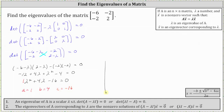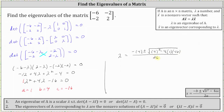I have the quadratic formula below for reference, but instead of x we'll have lambda. We have lambda equals negative b, which is negative four, plus or minus the square root of the quantity b squared — which is four squared — minus four times a times c, where a is one and c is negative 16. This is all over two times a, or two times one. Simplifying, we have lambda equals negative four plus or minus the square root of 16 plus 64, which is 80, all divided by two.